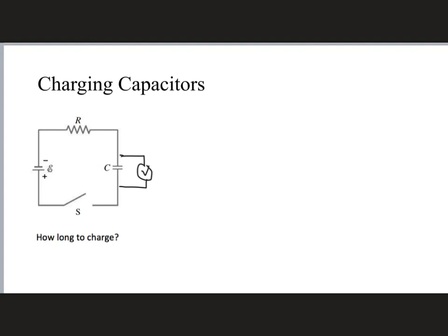What about the current? When the switch is first flipped, there are no charges repelling anything, so the current is at its maximum value. As current flows and charge builds up on the plates, the charges repel new incoming charges, making it harder for the battery to add more charge to the capacitor. So the current decreases as the capacitor charges, eventually reaching zero once the capacitor voltage equals the battery voltage.